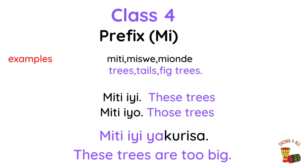Class 4, prefix mi. Class 4 includes all plural forms of class 3 nouns. Examples: miti, miswe, mionde. Example phrase: Miti iyi yakurisa — these trees are too big. Miti iyi — these trees. Miti iyo — those trees.